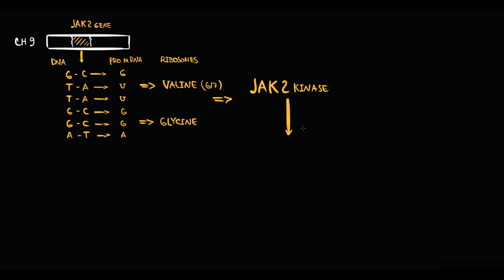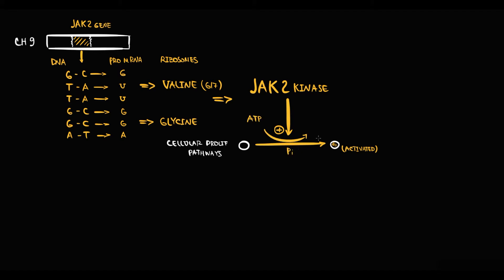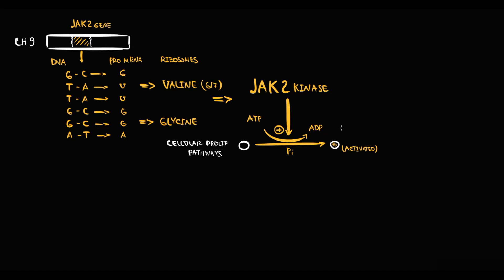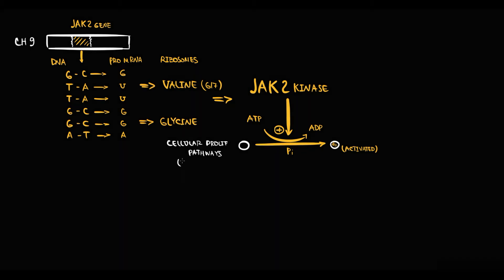The function of JAK2 kinase is to activate cellular pathways that are responsible for cellular proliferation. Activation of these pathways occurs by phosphorylation. In order to activate a pathway, JAK2 kinase uses an ATP molecule to phosphorylate proteins in the pathway, and as a byproduct, ADP is released. Importantly, JAK2 kinase is involved primarily in the regulation of myeloid cells.